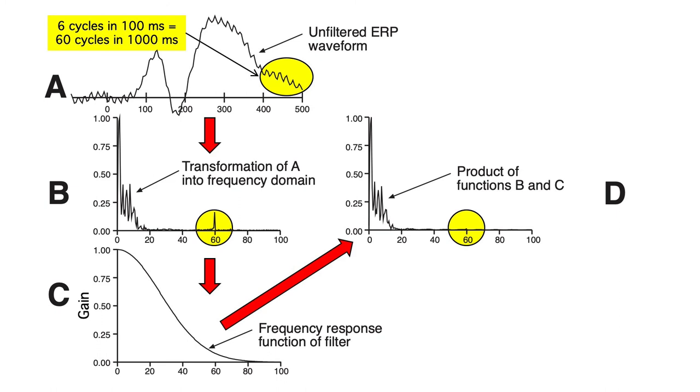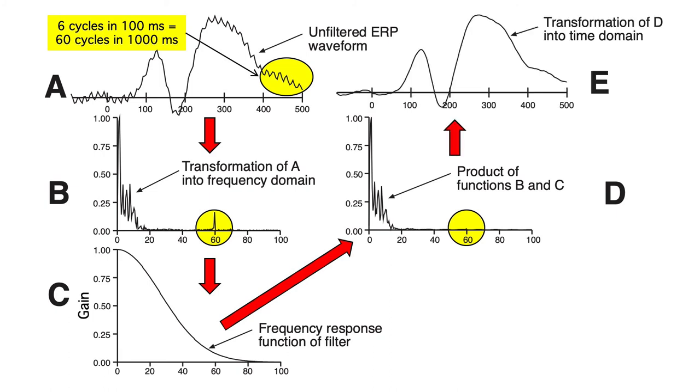Notice that the low frequencies aren't changed by very much, but the 60Hz is nearly eliminated. We then use the inverse Fourier transform to take the filtered data back into the time domain. Voila! We have a filtered ERP waveform that looks a lot like the original waveform, except that the high frequency noise is gone.